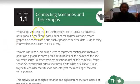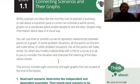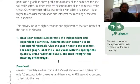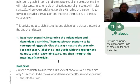In this assignment, we're going to be looking at several scenarios. Problem 1 says: read each scenario, determine the independent and dependent quantities, then match each scenario to its corresponding graph. Glue the graph next to the scenario. For each graph, label the x and y axis with the appropriate quantity and a reasonable scale, and then interpret the meaning of the origin. As you can see, there's quite a lot going on there.